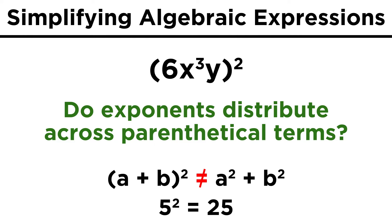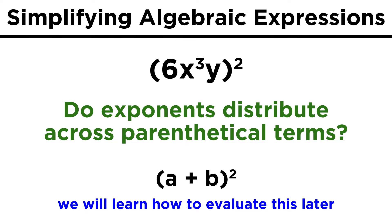For example, five squared is twenty-five, but if we change five to three plus two and try to distribute the exponent, three squared plus two squared is nine plus four, or thirteen, so we clearly weren't allowed to do what we did. To evaluate the square of a sum, we need another technique that we will learn later.